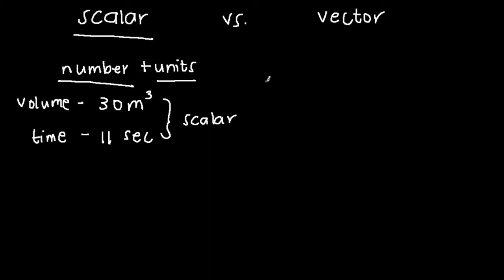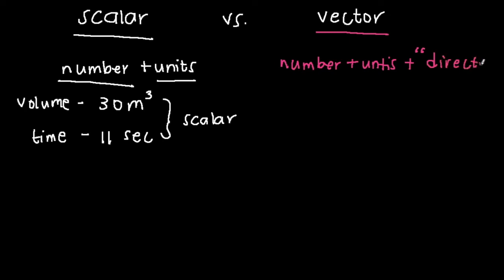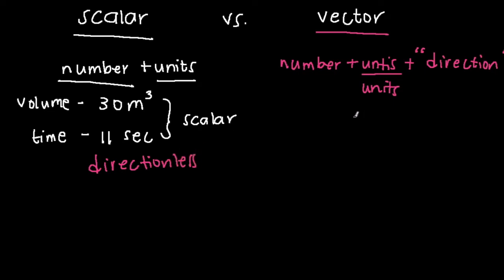A vector quantity, on the other hand, is anything that deals with the number, its units, and most importantly, its direction. Vector is number plus units plus direction. The only difference between the two is that scalar doesn't have direction — it is directionless — while vector has direction.